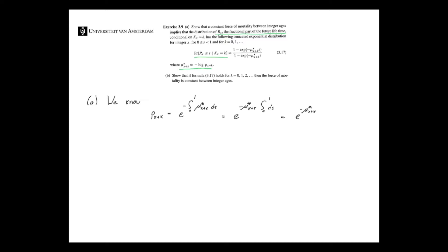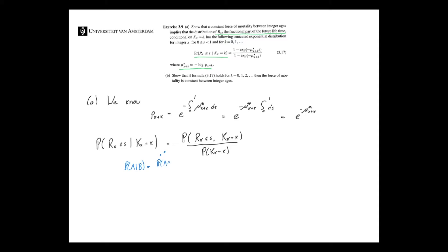Now let's start with this conditional probability and see where we end up. We're writing: the probability that Rx is less than or equal to s, conditional on Kx being equal to k. We can use conditional probability theory to rewrite this as a fraction of probabilities — the probability of both events being true, divided by the probability that Kx equals k. This uses the formula P(A|B) = P(A and B) / P(B).